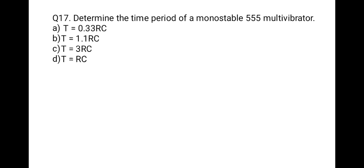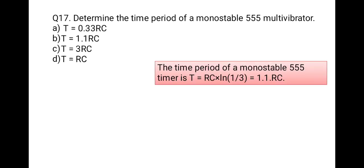The next question: determine the time period of a monostable 555 multivibrator. Options: T = 0.33RC, T = 1.1RC, T = 3RC, or T = RC. The time period of a monostable 555 timer is T = RC × ln(1/3), and after calculation the result is 1.1RC. So the time period is 1.1RC. Correct option is B.